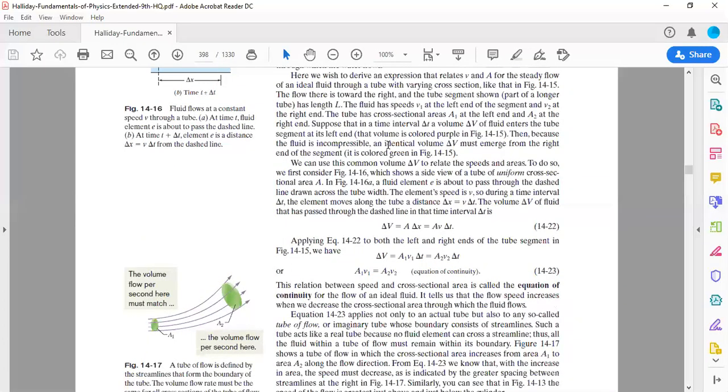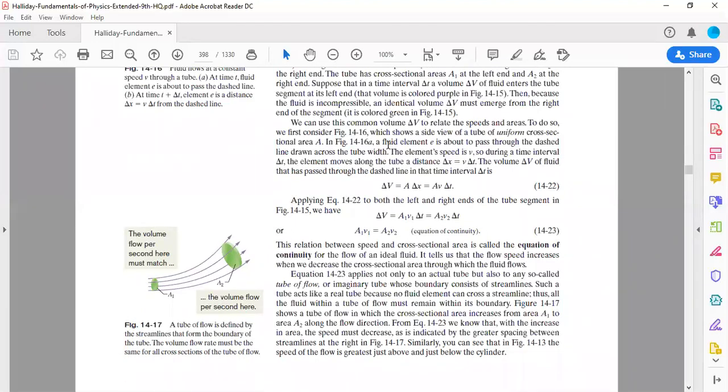This is the equation of continuity. It tells us about the relation between the area and velocity of the volume, the volume flow per second. Basically, the continuity equation is a derivation of conservation of mass.